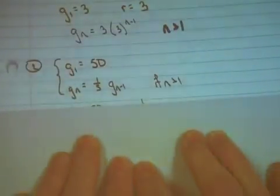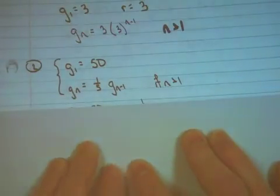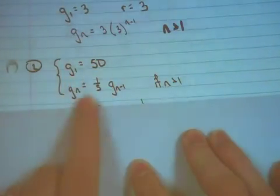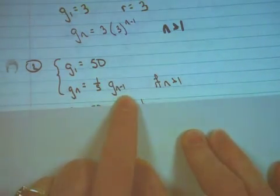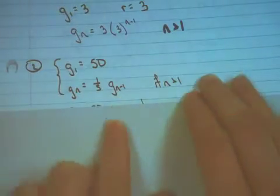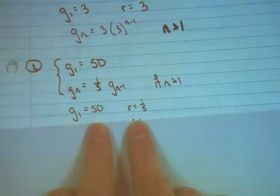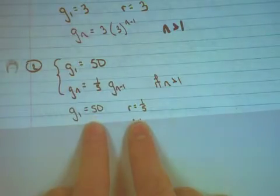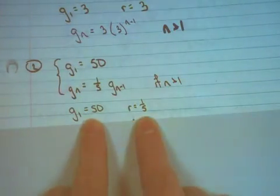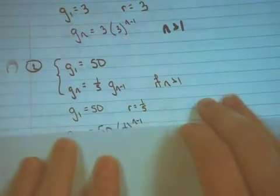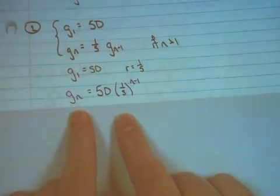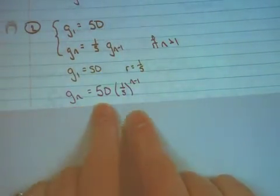Let's look at a second example. If I give you the recursive formula that g sub 1 is equal to 50 and g sub n is equal to 1 fifth multiplied by g sub n minus 1 if n is greater than 1, g sub n will be equal to 50 multiplied by 1 fifth raised to the n minus 1 power.